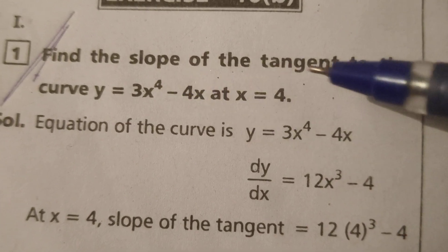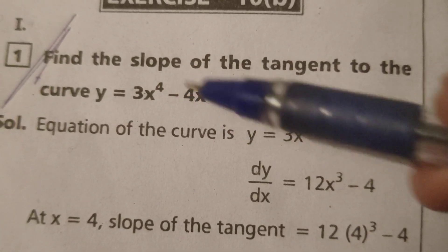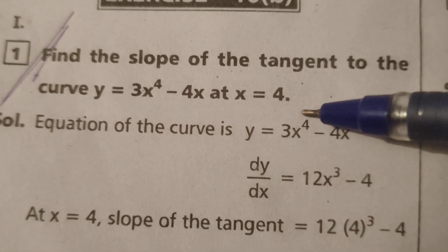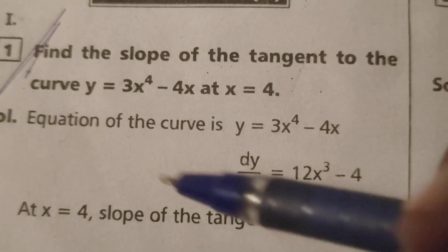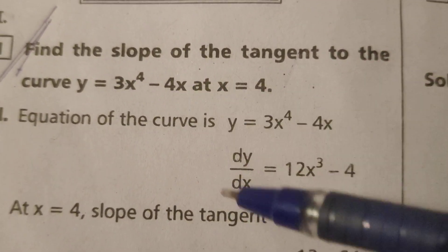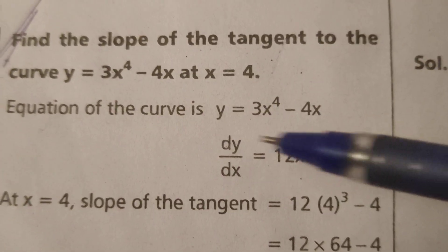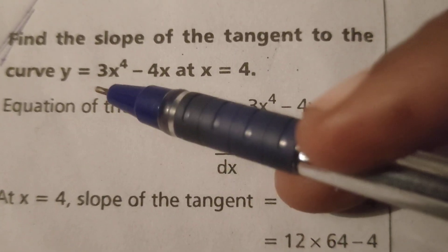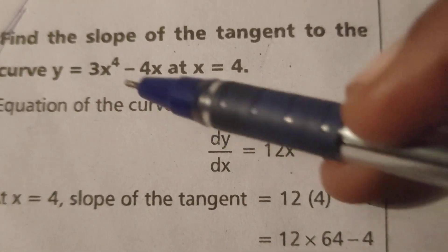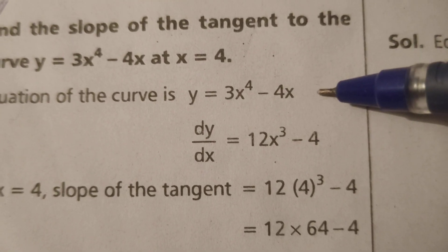Now we are going to find the slope of this tangent at x equals 4. First of all, here I write the given equation of the curve is y equals 3x to the power 4 minus 4x.